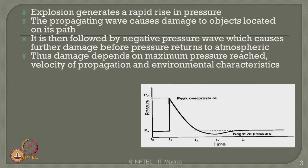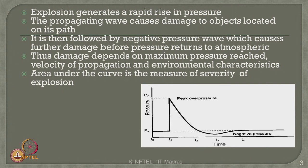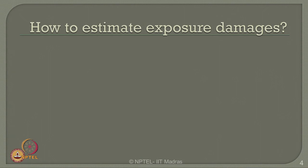The propagating wave causes damage to objects on its path. It is followed by a negative pressure wave which causes further damage before pressure returns to atmospheric. Therefore, the damage depends on the maximum pressure reached (P naught), velocity of propagation, and environmental characteristics. The area under the P versus time curve gives the measure of severity arising from an explosion.